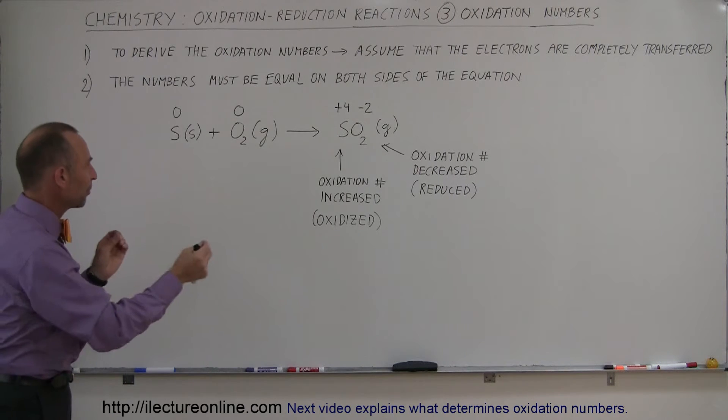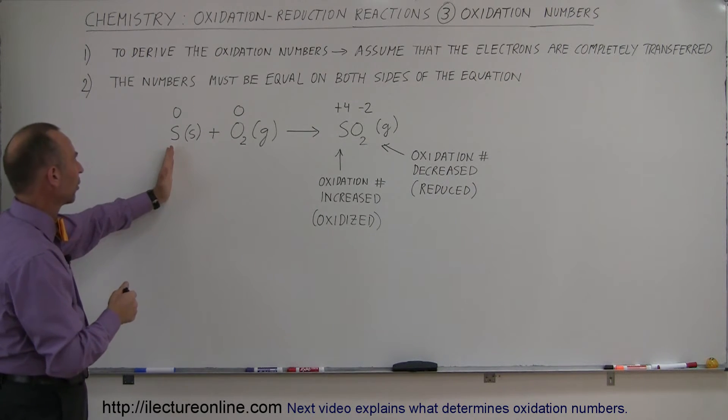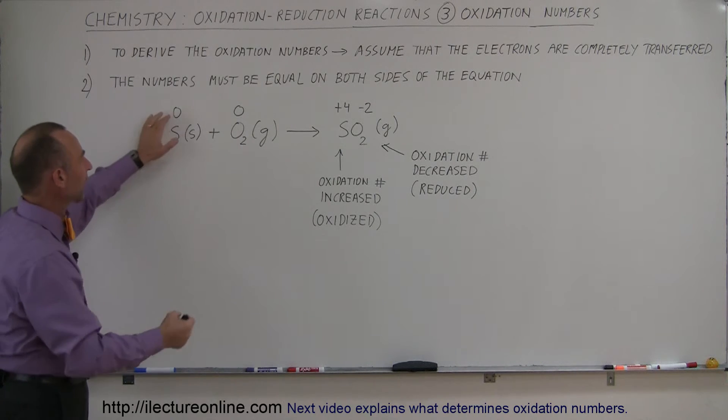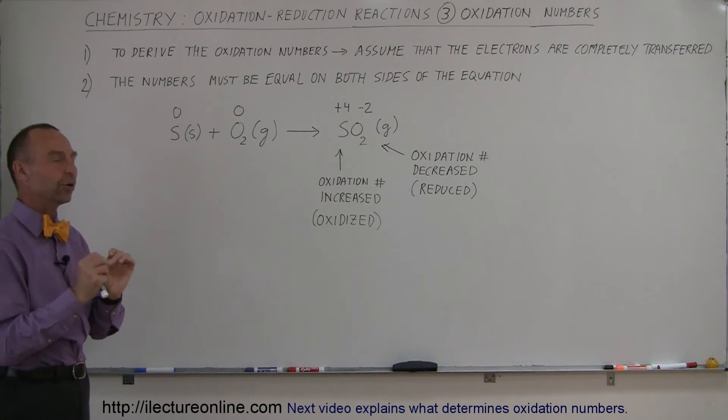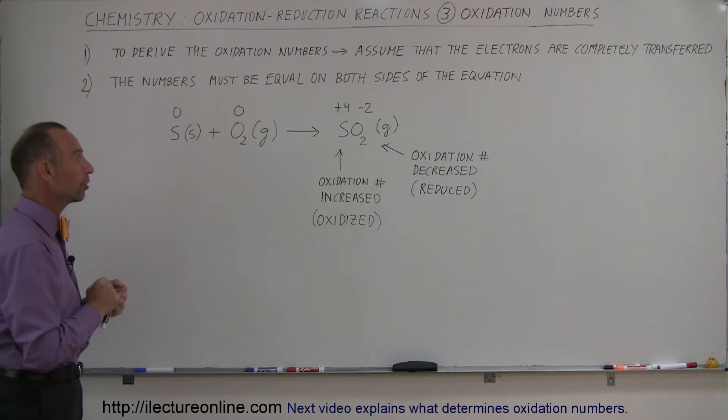If we separate it from all the other atoms they're normally with in nature, we have pure sulfur, pure oxygen, and so they have oxidation number zero. In other words, they have the exact same number of electrons as protons in the nucleus.